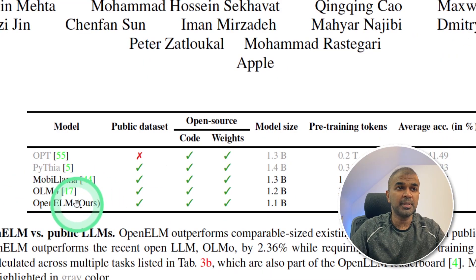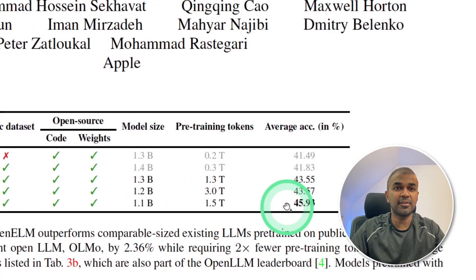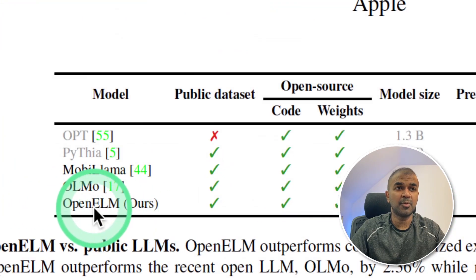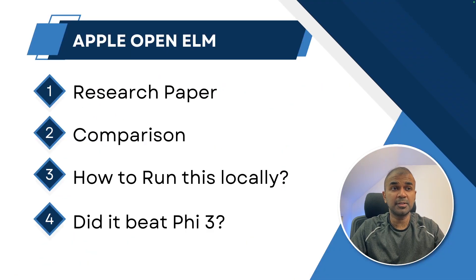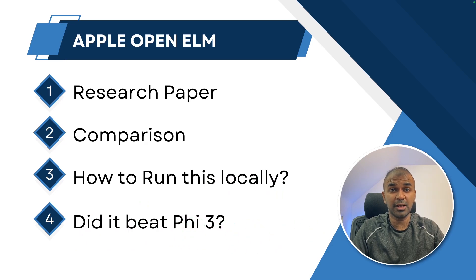Open ELM beats all prior models released previously — you can see the average score here. This model is compared with other small language models. In this video we are going to see the details in the research paper, comparisons between other language models, how to run this model locally on your computer, and finally whether it beats Phi-3, the latest small language model released by Microsoft. That's exactly what we're going to see today. Let's get started.